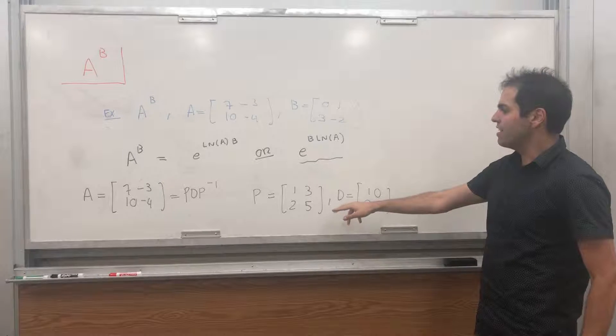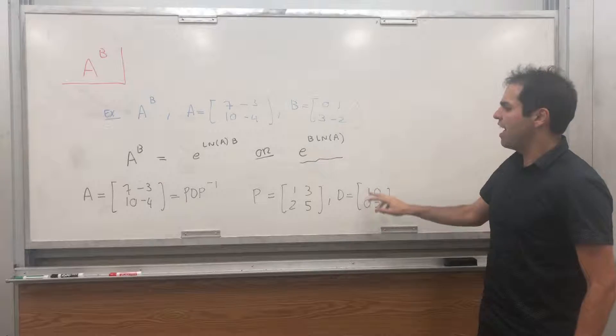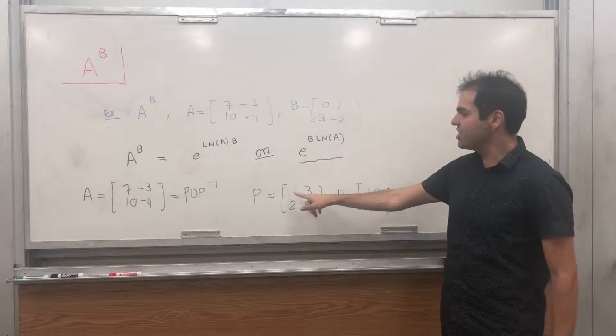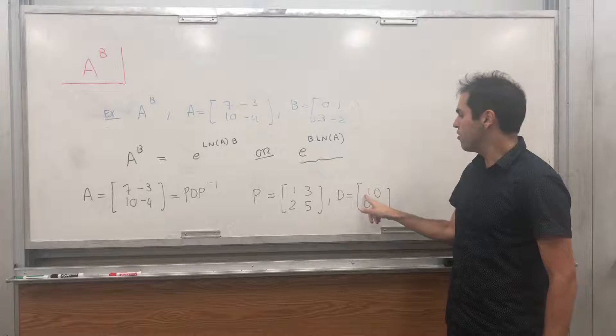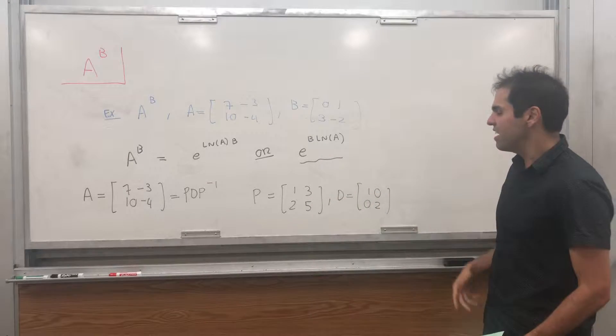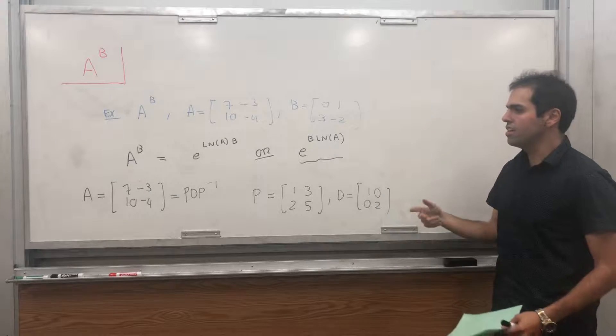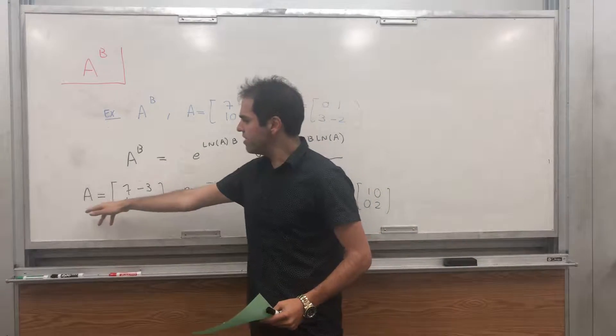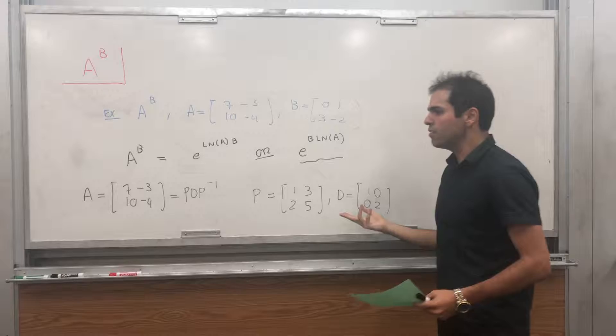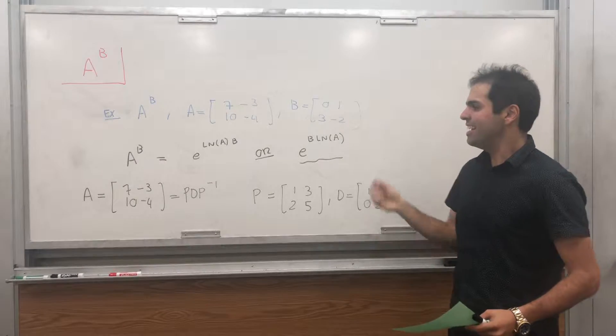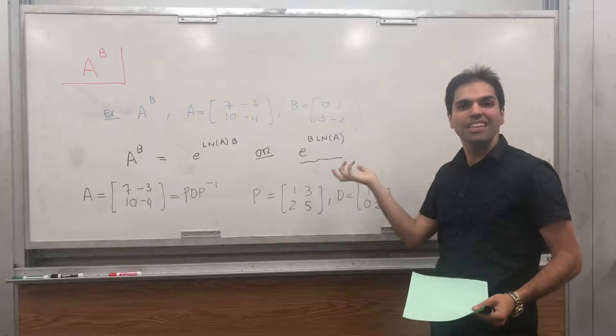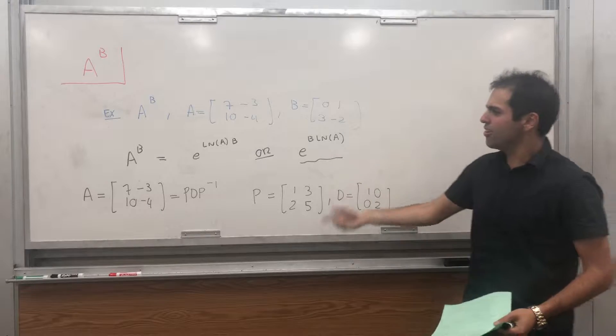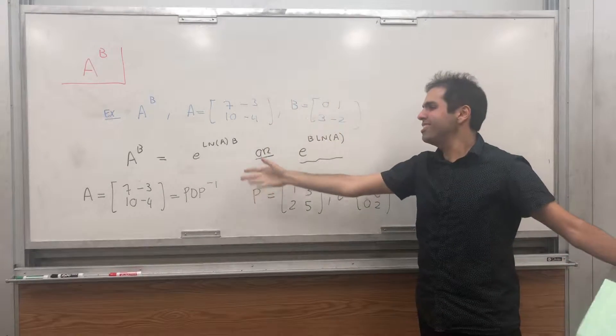So, I will skip this process. It's this process called diagonalization. And there are a bunch of videos on this. But, basically, to find D, you find the eigenvalues of A. And, then, the columns of P are the corresponding eigenvectors. And, you can indeed check that 1, 2 is an eigenvector of A corresponding to 1. And, 3, 5 is an eigenvector of A corresponding to 2. How would that help us? Because, look, if you watch my previous videos, if A is P D P inverse, then, for example, e to the A is P e to the D P inverse. Or, square root of A is P square root of D P inverse.